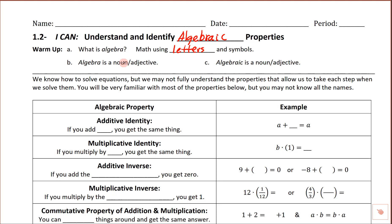Algebra is just a noun — it is a thing. It's math using letters and symbols. The word algebraic is an adjective, so it describes the type of things that we're going to be doing. It describes a noun — it describes the operations and the type of things we're going to be doing.